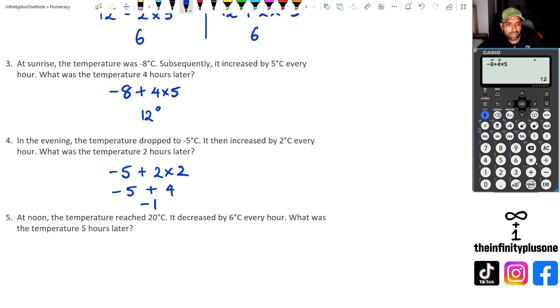Finally, question five: at noon, the temperature reached 20 degrees and then decreased six degrees every hour. What was the temperature five hours later? So because it's decreasing, we've got to go minus five times six. Again, this is very similar to question two. You could have actually done 20 plus five times negative six.